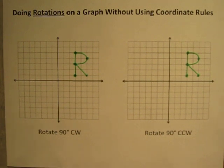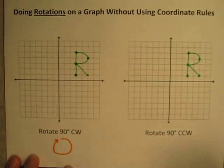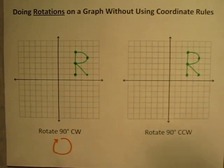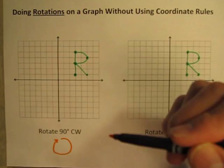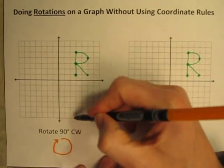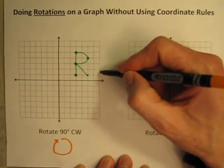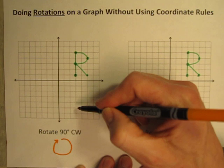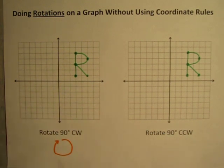Let's just visualize what this is going to look like. First off, 90 degrees clockwise — like the hands of a clock — a clockwise rotation goes around this way. So this letter R is going to rotate around this way. 90 degrees is a one-quarter turn; 360 degrees is all the way around. So this letter R is going to come down into this quadrant of the graph. If you're having trouble visualizing it, the easiest thing I can recommend is just turn the paper a quarter turn.